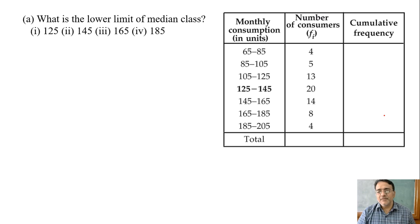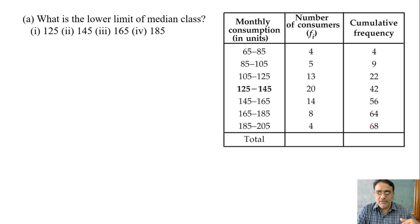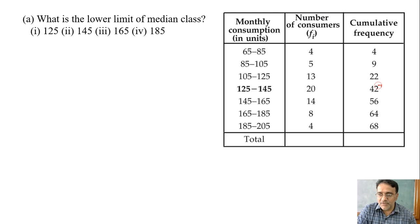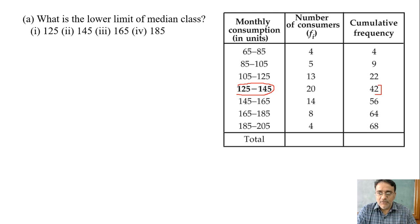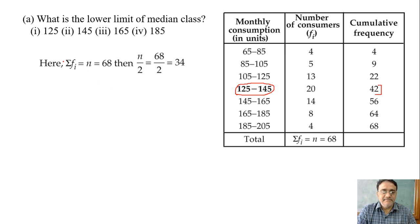We will do 68 divided by 2, which is 34. The cumulative frequency immediately after 34 is 42, so the median class is 125 to 145. What is the lower limit of this class? 125. So the correct option is the first one.